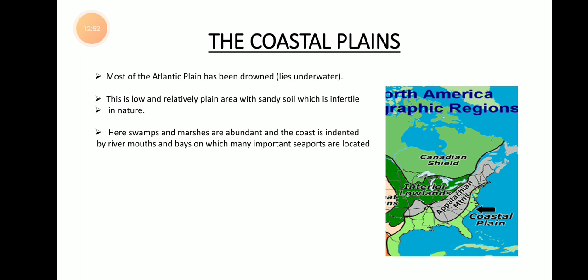Swamps and marshes are abundant in the coastal plains. The coast is indented by river mouths and bays on which many important seaports are located. A bay is an oval-shaped carve in seawater or river water. These are the four important physiographical land systems of North America.